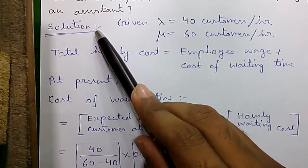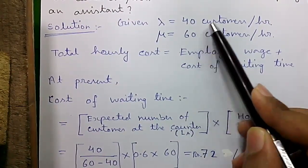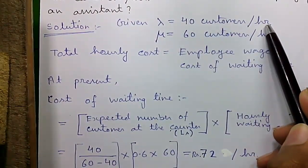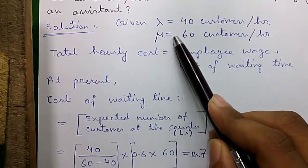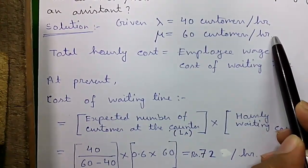So let's proceed to the solution. Given lambda equals to 40 customers per hour and mu or the handling capacity is 60 customers per hour at present.